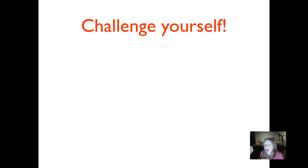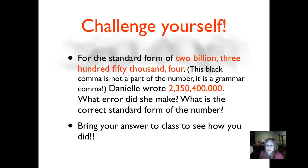Now, if you've gotten all of the practice right, or you've figured out where you made your mistakes, and you're ready to challenge yourself, this is for you. Today's challenge for the standard form of 2,350,004, Danielle wrote that number right there. What error did she make? What is the correct standard form of the number? I'm not going to read it to you because I want you to practice reading it since this is a challenge. Just make note that that black comma that comes after the 4, it's not a part of the number. It's a grammar comma to separate that from the next section. When you've figured it out, go ahead and write it in your journal and bring it to class to see how you did.